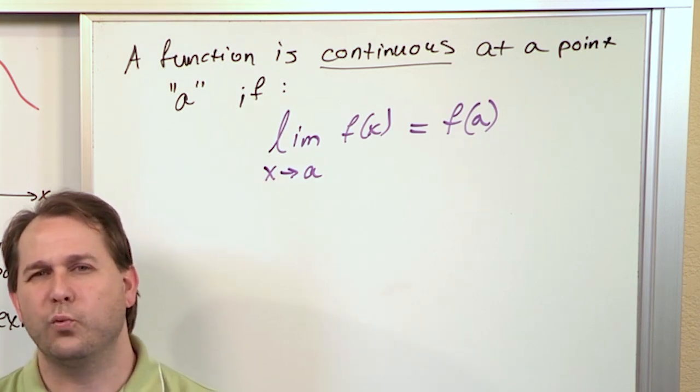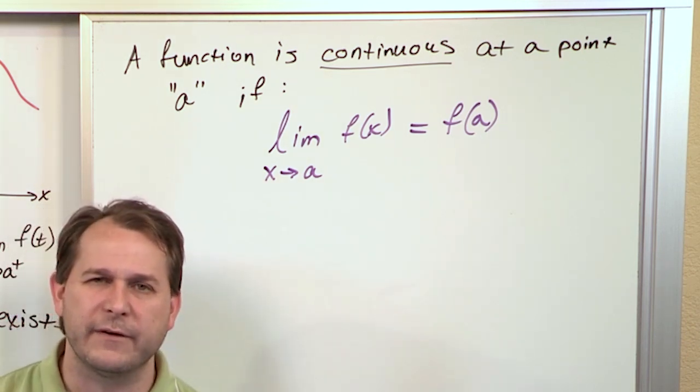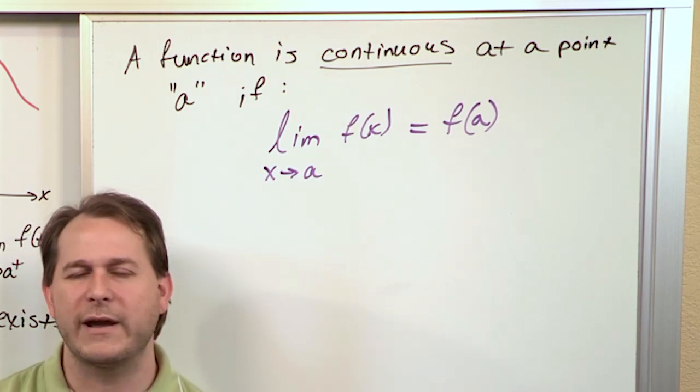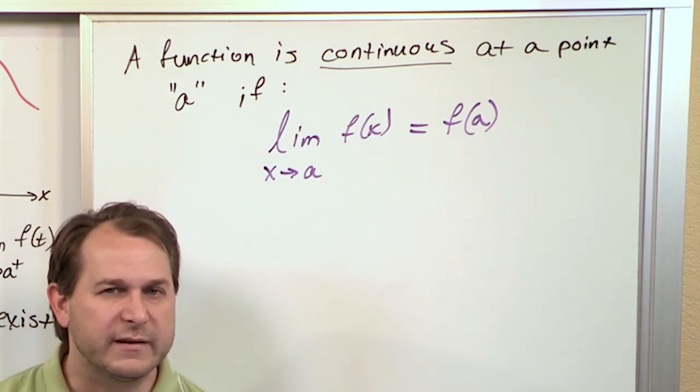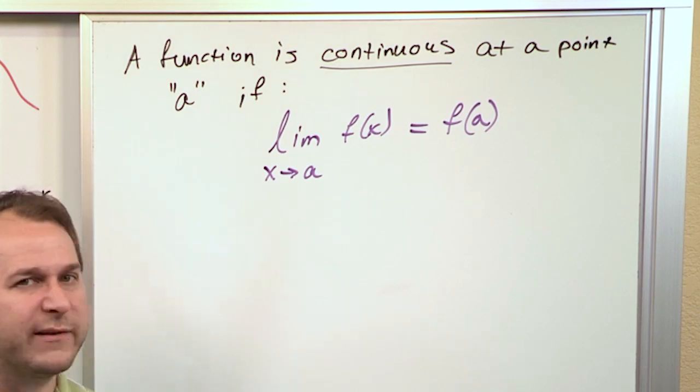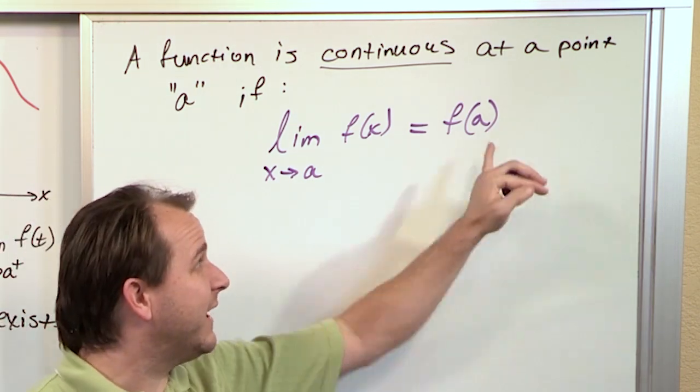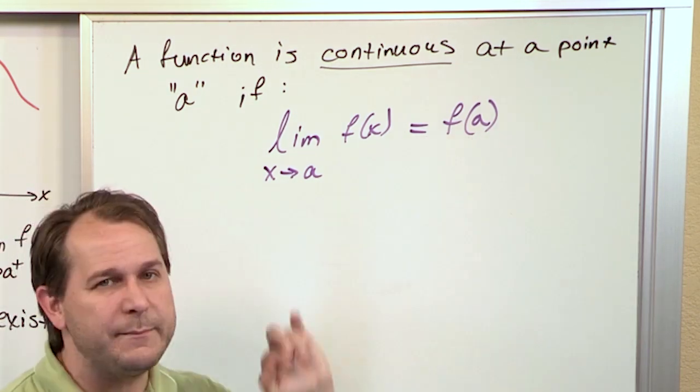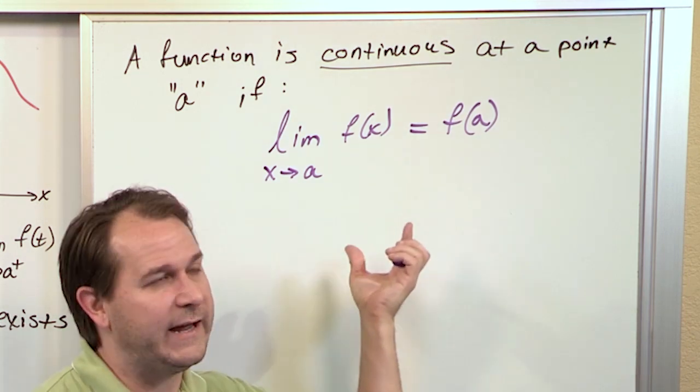You only really have to worry if you get these weird discontinuous jumping functions, or if you get zero over zero, you have to do a little more work. But ultimately, if it's smooth and continuous and well-behaved, you should just be able to plug in the value into the function, and that's going to be the value of the limit. That's all it's saying.